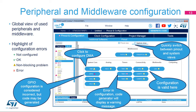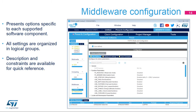Critical errors are represented by a red X, and the configuration must be modified to continue. To add more peripherals and components, return to the pinout tab. Each middleware software component has options that are different, but they are all presented in a similar fashion, giving easy access to initialization options and providing informative descriptions.